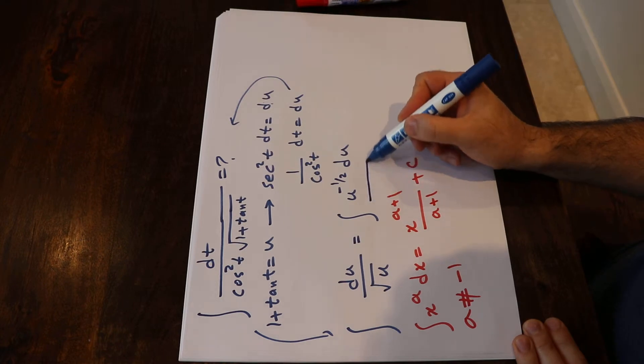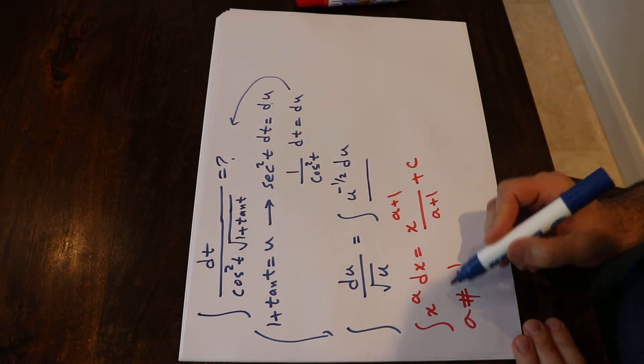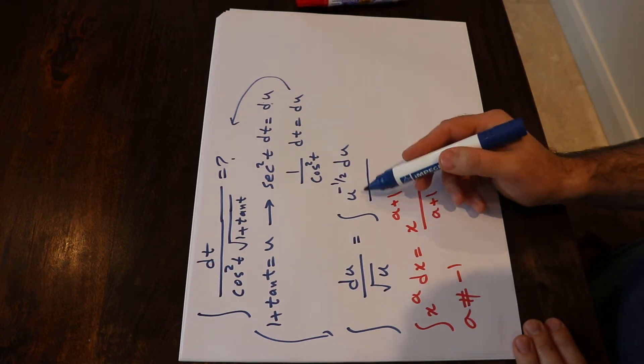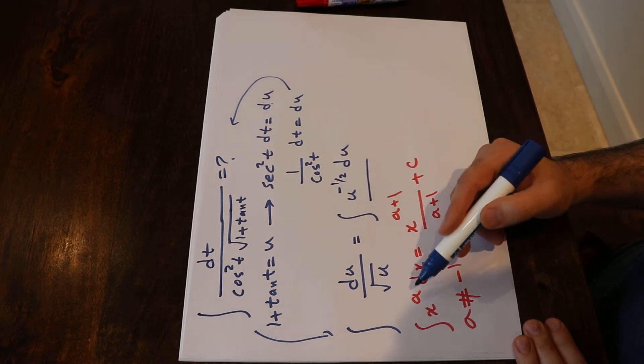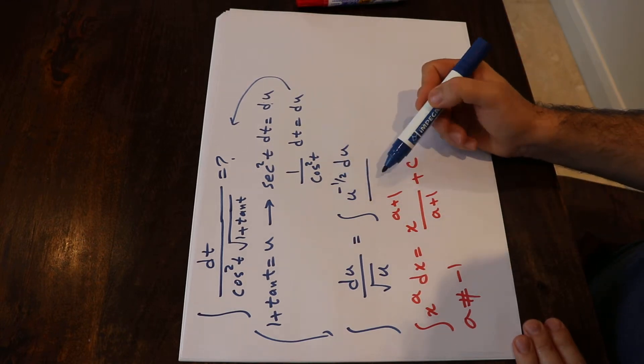Okay, if you compare this integral with this formula, you see they have the same format, and in this particular case a is equal to minus 1 divided by 2.